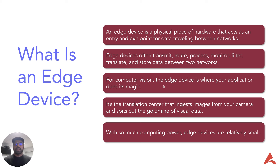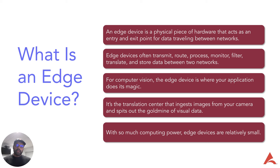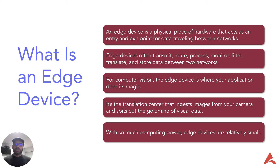What is an edge device? An edge device is a physical piece of hardware that acts as an entry and exit point for data traveling between networks. Edge devices often transmit, route, process, monitor, filter, translate, and store data between two networks. For a computer vision application, the edge device is where your application does its magic — frames come in from cameras, you process the whole frame and run the whole application on the edge device.